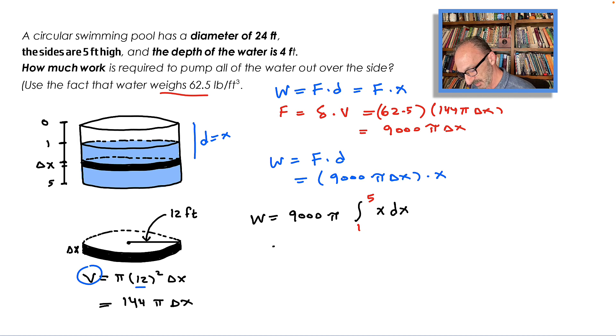That will give me 9000π times x² over 2 from 1 to 5, which is 9000π, plug in 5, that's 25 over 2, minus 1² which is 1 over 2.